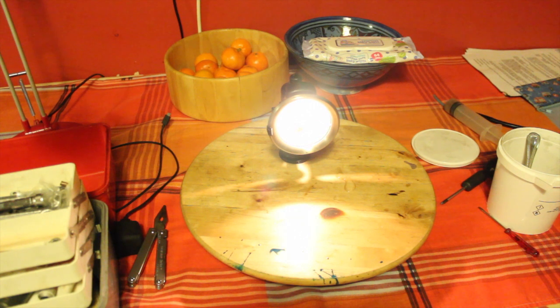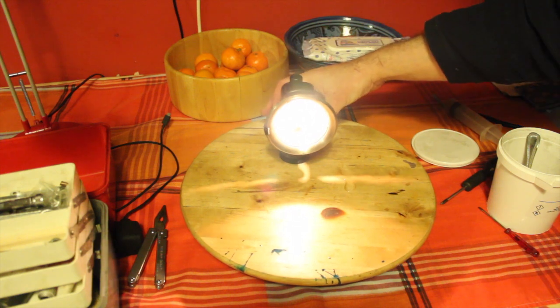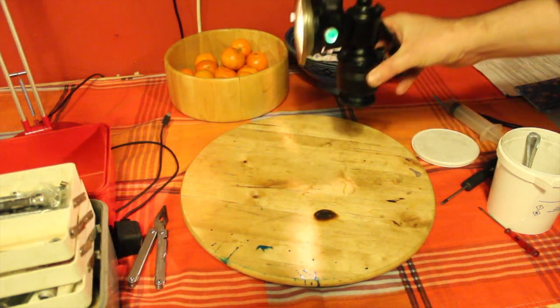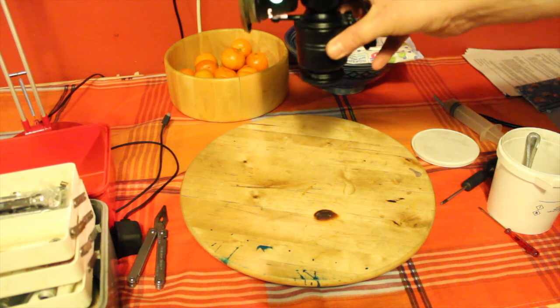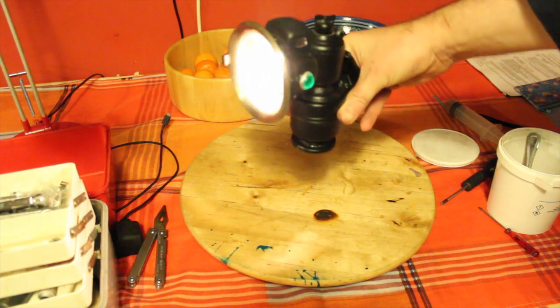So there we are. One old fashioned acetylene bicycle light. Running on calcium carbide. These two little green side lights, which I think are really quite lovely.